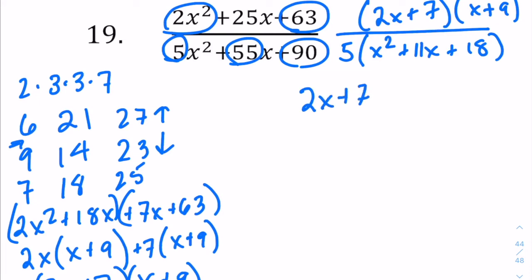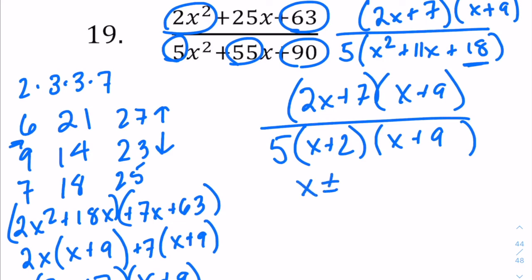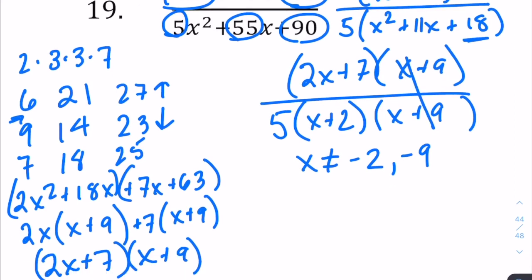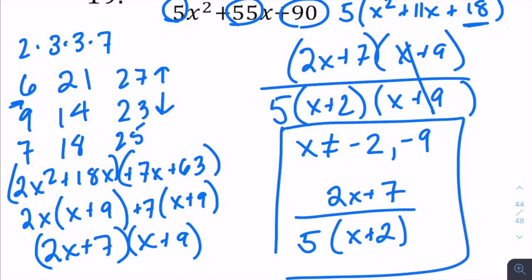Rewriting: (2x plus 7)(x plus 9) over 5 times (x squared plus 11x plus 18). Factoring the denominator trinomial — numbers that multiply to 18 and add to 11 — gives (x plus 2)(x plus 9). So the full expression is (2x plus 7)(x plus 9) over 5(x plus 2)(x plus 9). The excluded values are x cannot equal negative 2 or negative 9. Canceling the (x plus 9) factors, we're left with (2x plus 7) over 5(x plus 2).